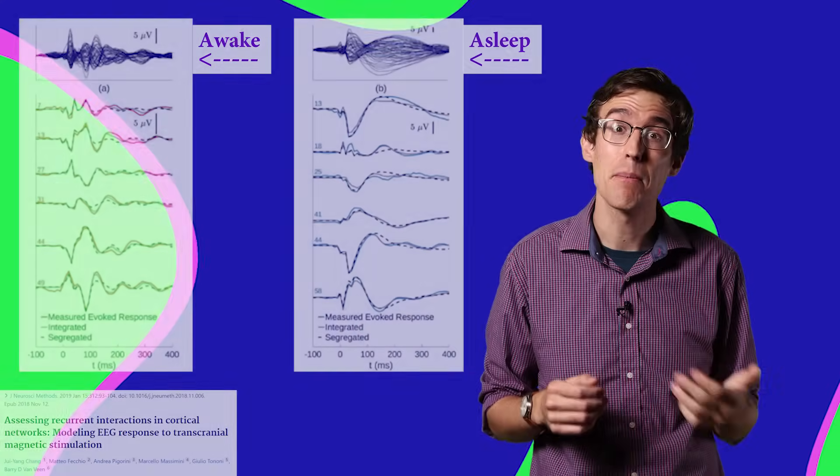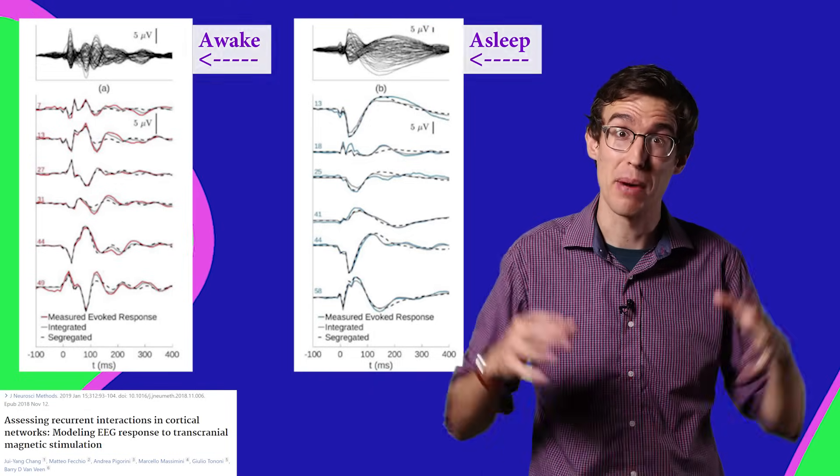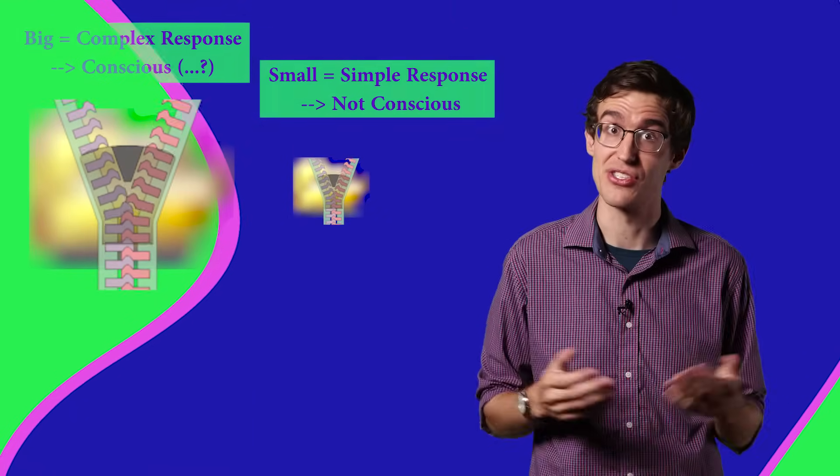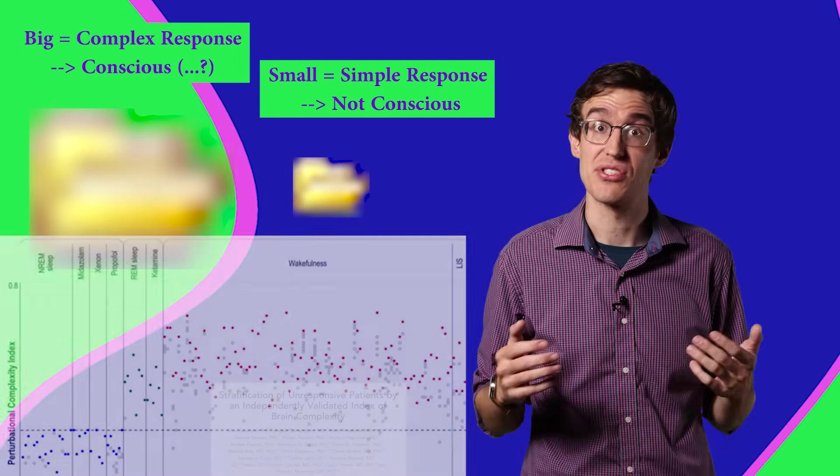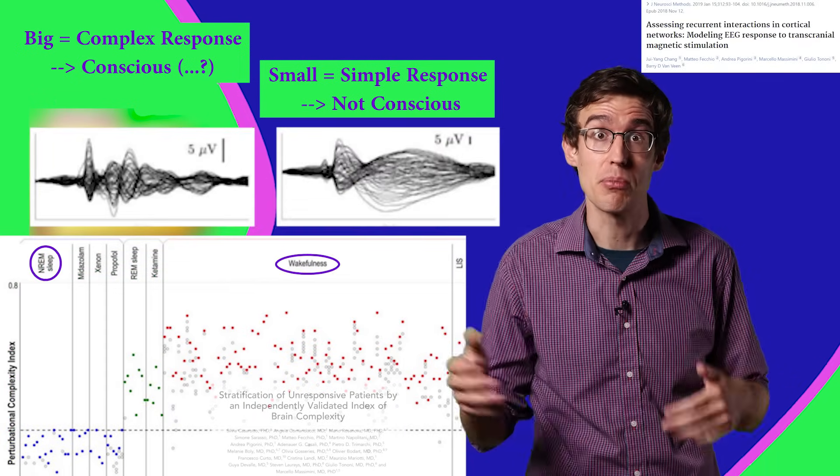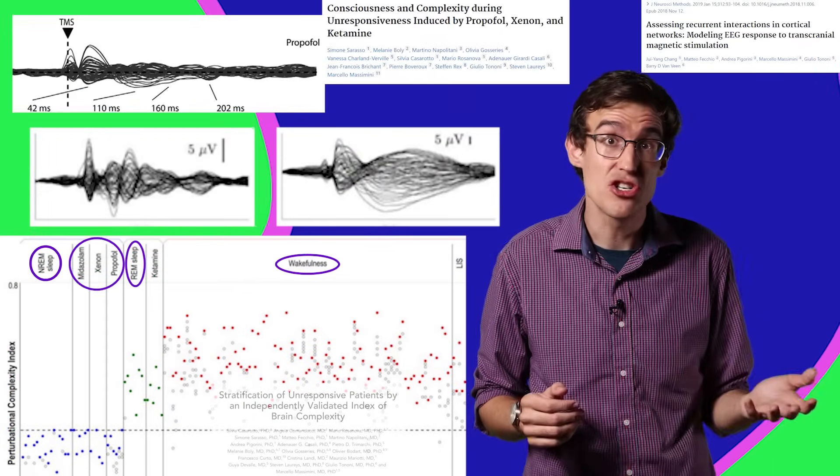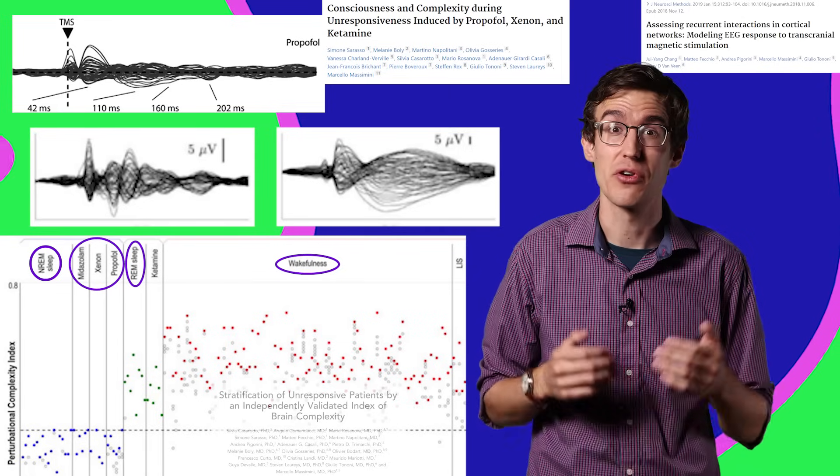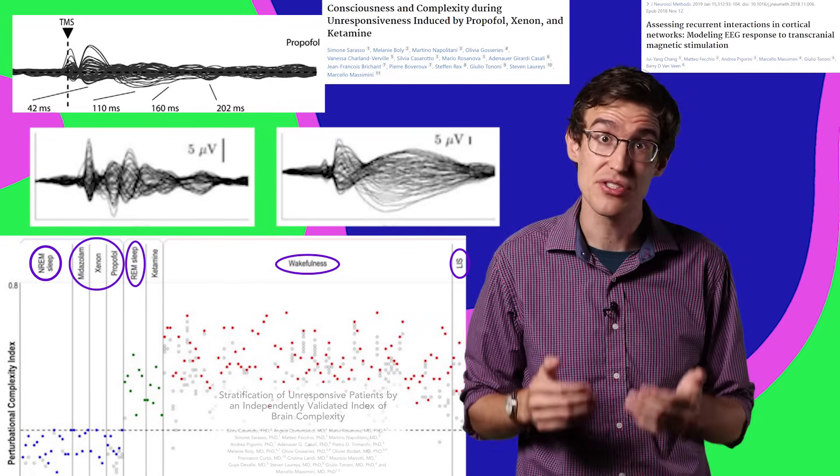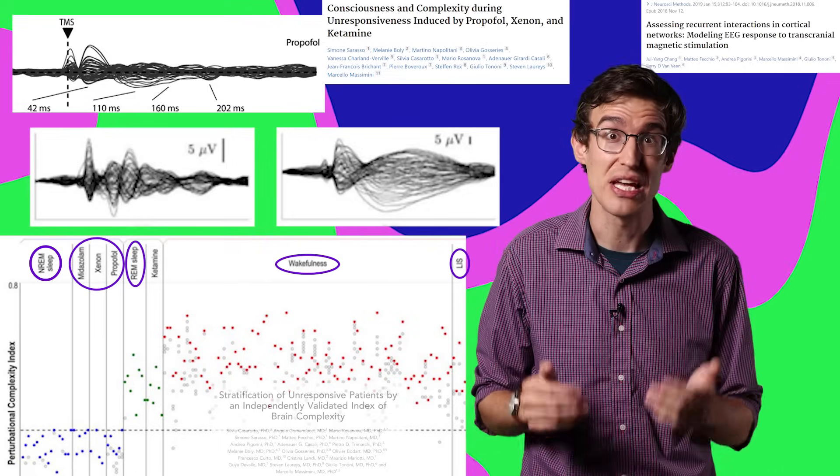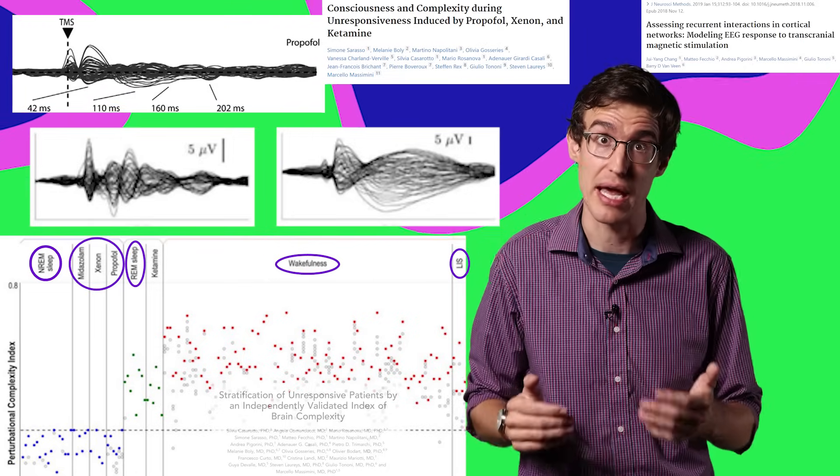Then you see how complex the brain response was by compressing the EEG data the same way you would a zip file. Methods like the zap and zip can tell if you're awake or asleep or dreaming, if you're under anesthesia. And they've even shown promise for identifying people with locked-in syndrome, who are fully conscious even though they're totally paralyzed and unable to communicate.